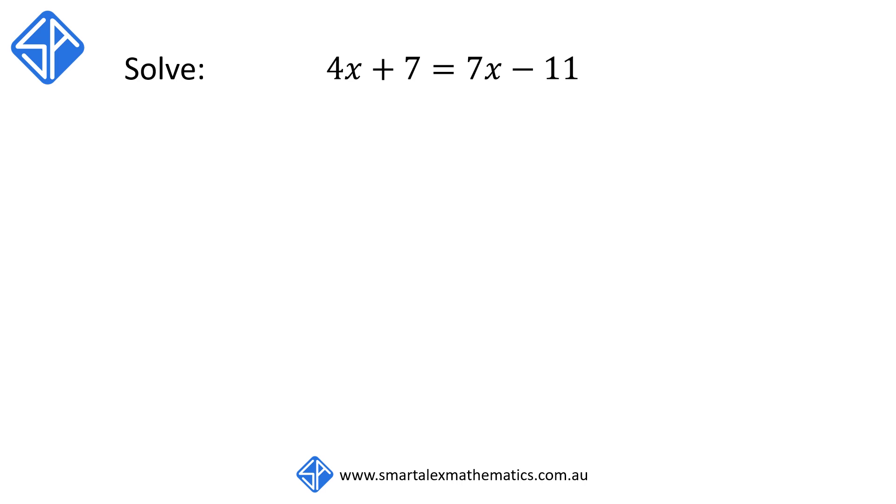So this time the same example: 4x plus 7 is equal to 7x minus 11. I'm going to subtract 4x from both the left and the right hand side. The 4x will now disappear so that we're left with 7 is equal to 3x minus 11.